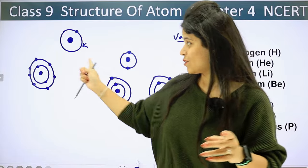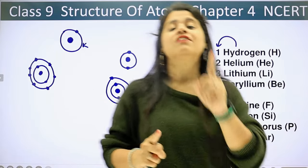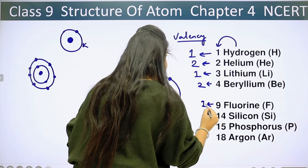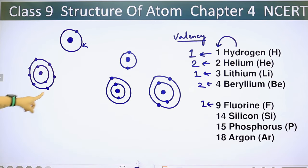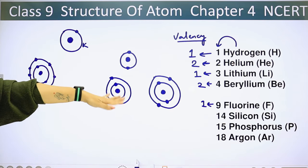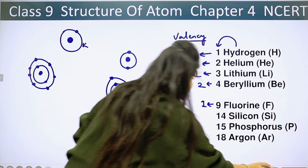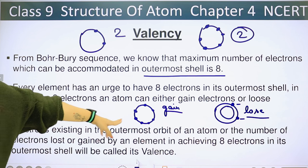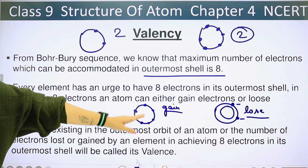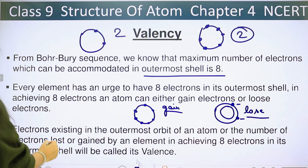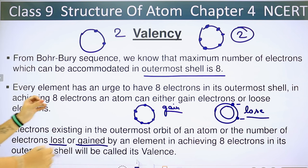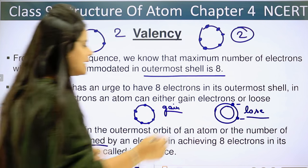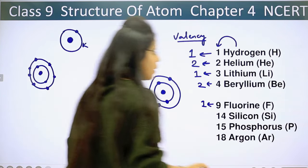Since the outer shell has 7 electrons, fluorine tries to gain 1 more electron to complete its 8. Looking at the definition — valence is the number of electrons lost or gained by an element — fluorine will try to gain 1 electron. That is why its valence is 1.